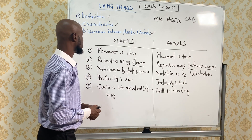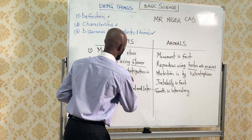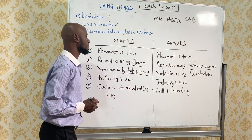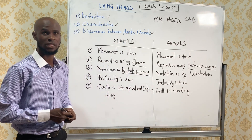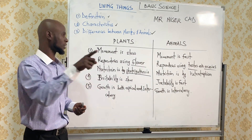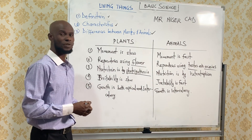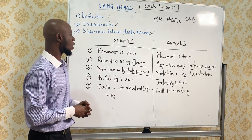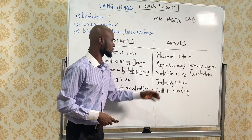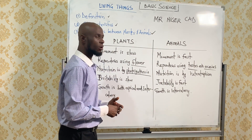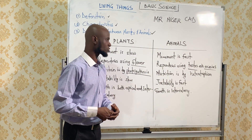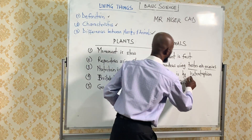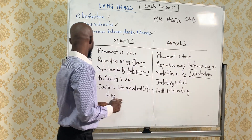Nutrition is by the process of photosynthesis — that is, plants feed using sunlight energy — while animals feed depending on plants, through the process of heterotrophism.